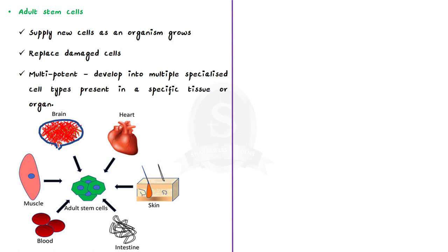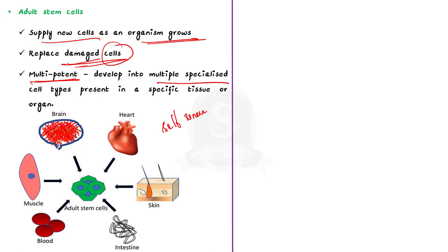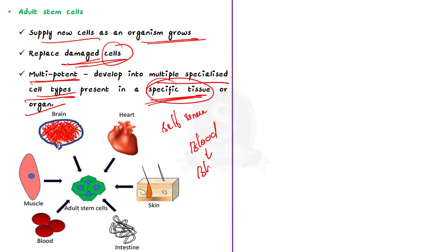Then comes adult stem cells. Adult stem cells supply new cells as an organism grows and to replace cells that get damaged. They are said to be multipotent, meaning the cells have the capacity to self-renew by dividing and to develop into multiple specialized cell types present in a specific tissue or organ. For example, blood stem cells can only replace the various types of cells in the blood, and skin stem cells provide the different types of cells that make up our skin and hair.